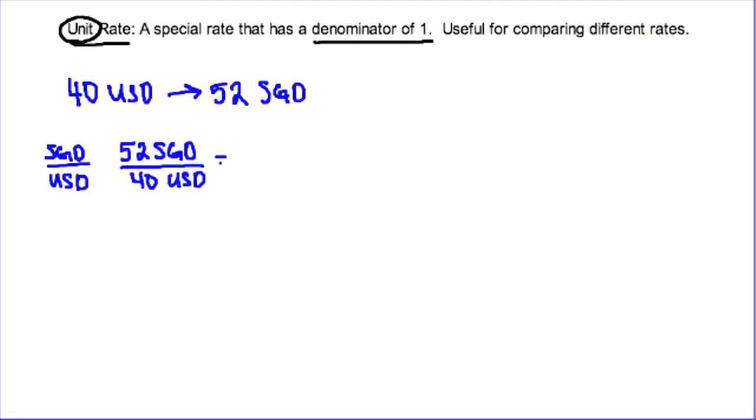Now all that a unit rate does is it's an equivalent rate that has a denominator of one. So I'm going to find out how many Singapore dollars is equal to one US dollar. To do that, I'm going to focus on that property of equality idea. To change 40 into one, I need to divide that by 40. So I'm going to do the same thing to the top part of my ratio. 52 divided by 40 is 1.30 Singapore dollars. So now I get a unit rate that 1.30 Singapore dollars is equal to one US dollar.